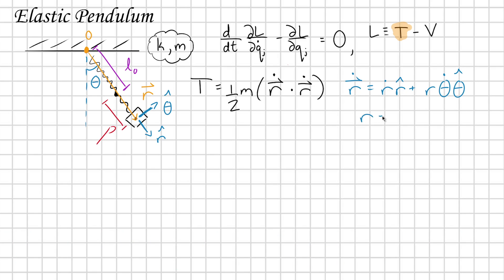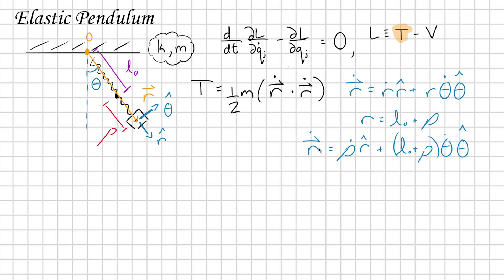Remember that r here, the length of this vector, is really just L0 plus rho. So plugging straight in, r dot equals rho dot r hat plus (L0 plus rho) times theta dot in the theta hat direction — since L0 is a constant, that derivative goes to zero. Now we can plug r dot into our kinetic energy expression by squaring it, giving us: one half m times (rho dot squared plus (L0 plus rho) squared times theta dot squared). This is the expression for our kinetic energy.